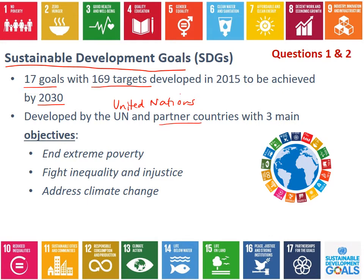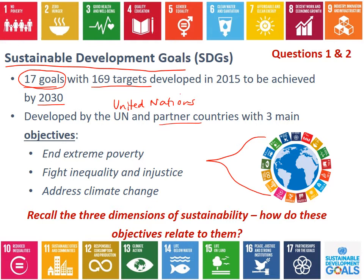There are 17 goals, and the idea is that all of them will achieve these three objectives. Think for a second about the three dimensions of sustainability we looked at a few weeks ago, and consider how these objectives — ending extreme poverty, fighting inequality and injustice, and addressing climate change — relate to those specific dimensions of sustainability. You'll probably notice there's a pretty big overlap between them.